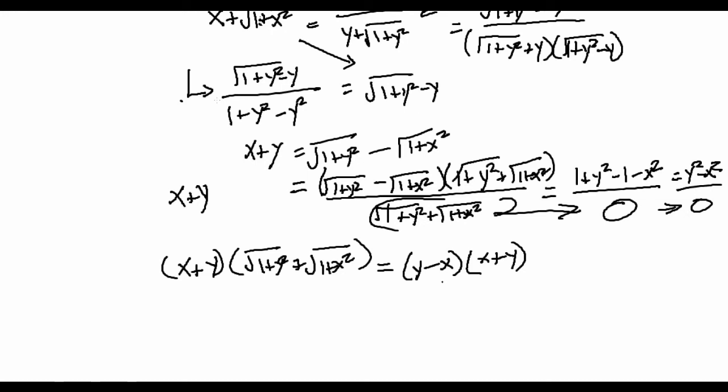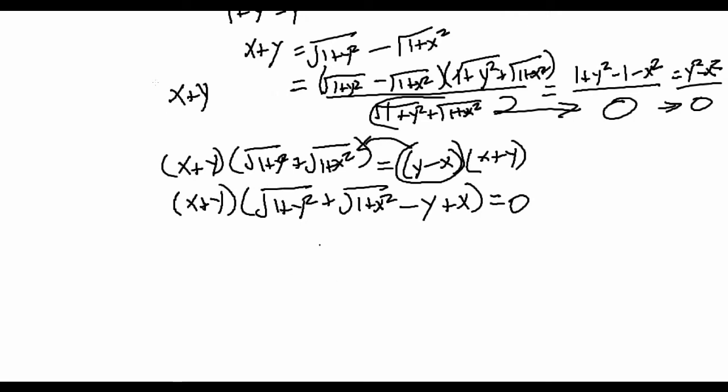And well, what do we do from here? You may be very tempted to divide both sides by x plus y because dividing both sides by x plus y would make the equation simpler. However, we are trying to figure out x plus y, so we don't actually want to factor it out. We instead want to move everything to the left, so after you move it over and use the reverse distributive property, you get x plus y times square root 1 plus y squared plus square root 1 plus x squared minus y plus x equals 0.